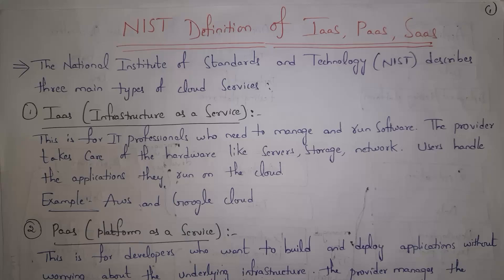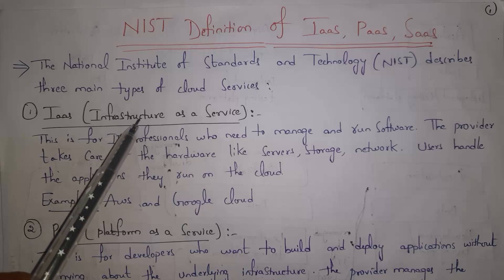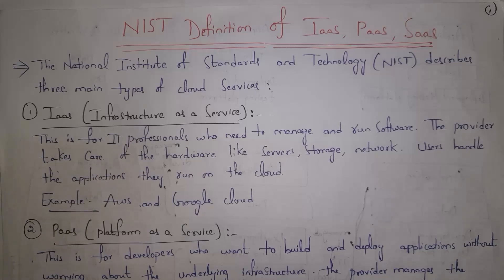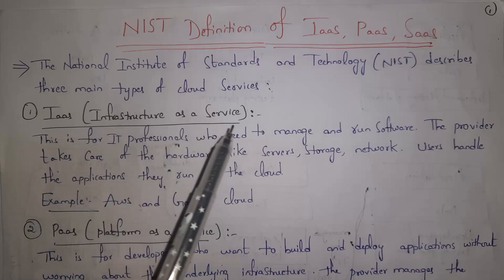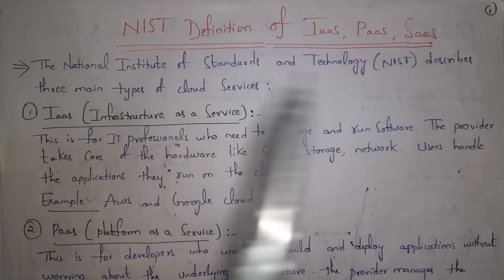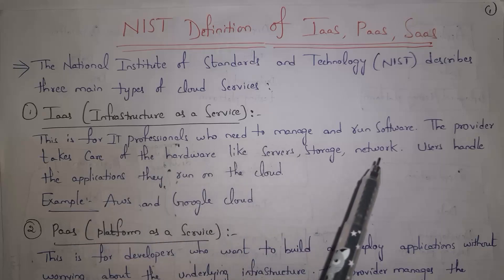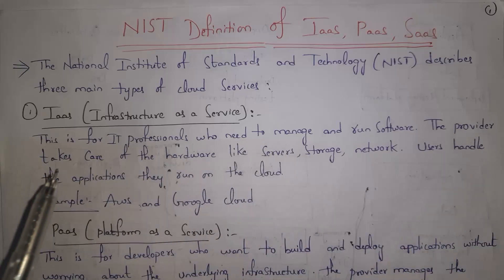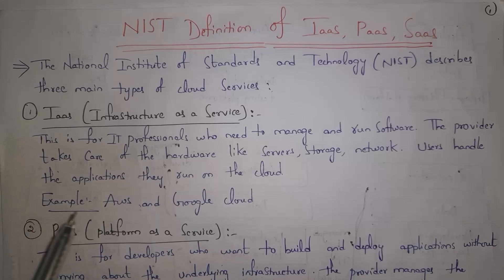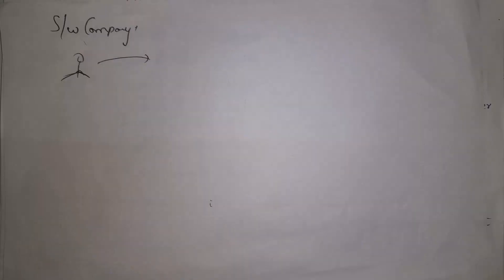First I will explain the NIST definition of Infrastructure as a Service — shortly we call it IaaS. IaaS is for IT professionals who need to manage and run software. The providers take care of hardware like servers, storage, and network, while users handle the applications they run on the cloud. Examples include AWS and Google Cloud.